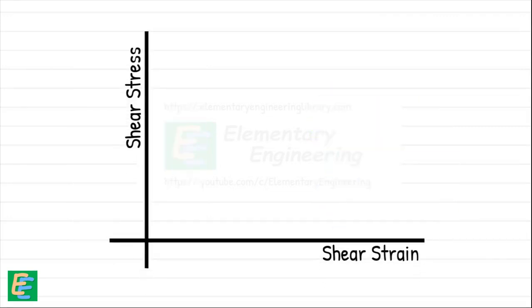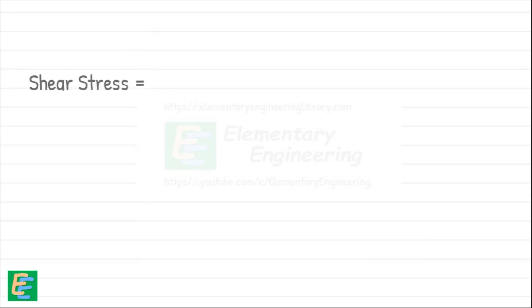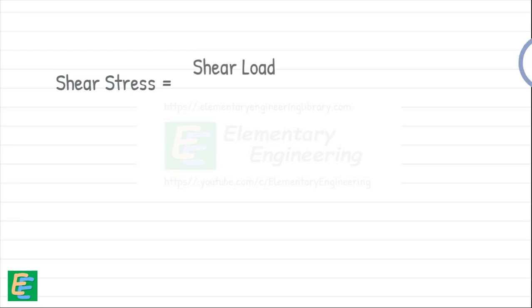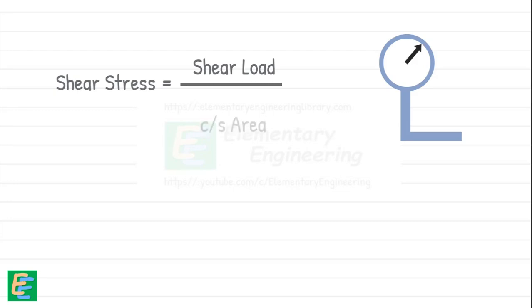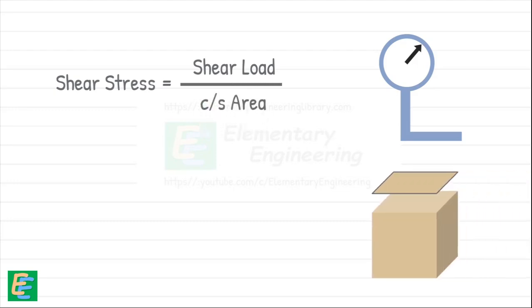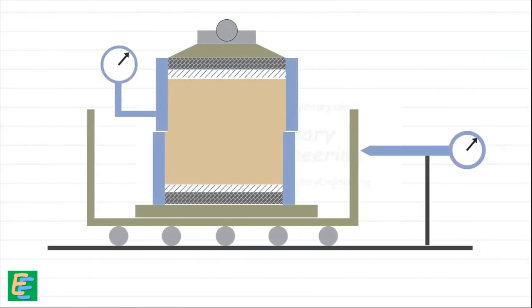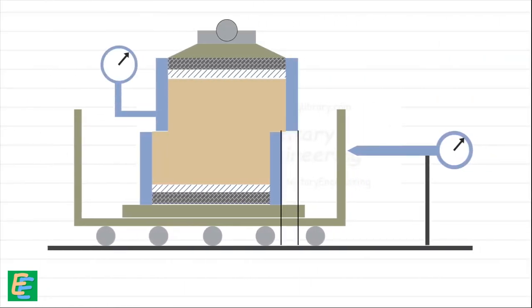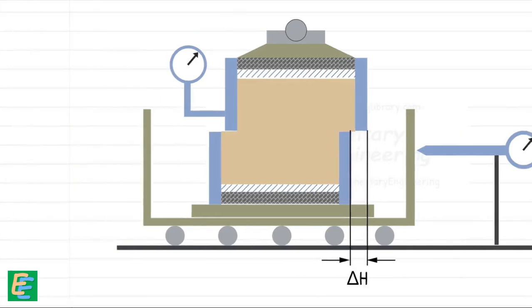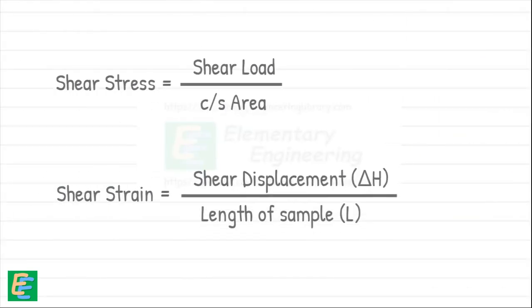Now we begin our calculations with the results of the test. We create a plot of shear stress against shear strain. The shear stress at any point is calculated by dividing the shear load indicated by the proving ring by the cross-sectional area of the sample. The shear strain at a particular load is found by dividing the shear displacement Δh — the amount the soil sample moves horizontally — by the initial length of the soil sample in the direction of movement, capital L.